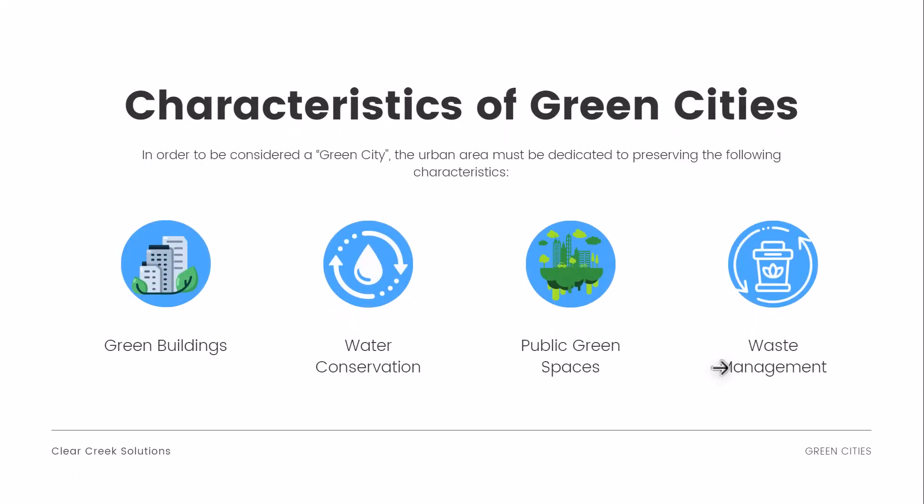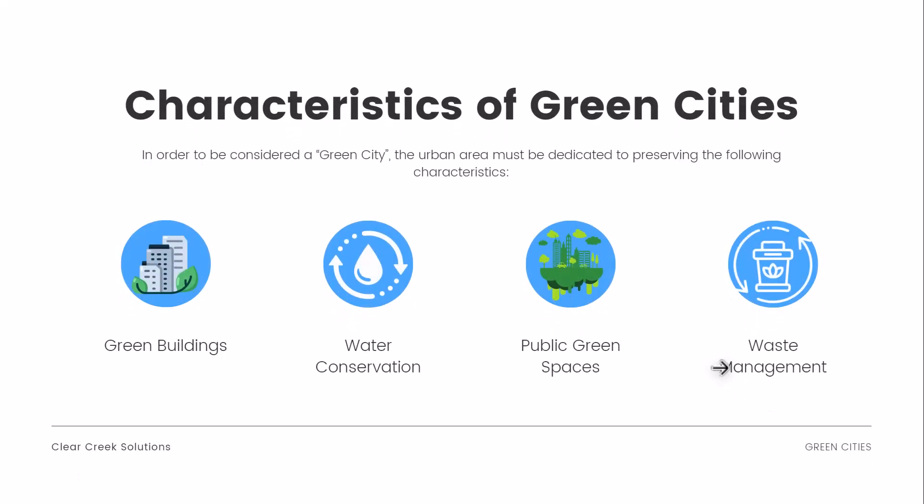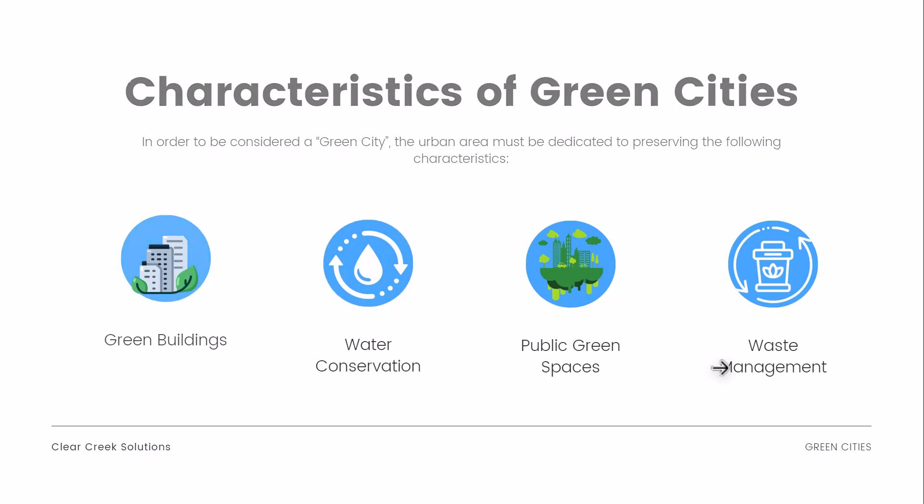So what are some of the characteristics of green cities? In order to be considered a green city, the urban area must be dedicated to preserving the following characteristics: green buildings, some form of water conservation project or infrastructure, public green spaces, and some form of waste management that is sustainable.